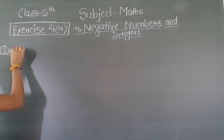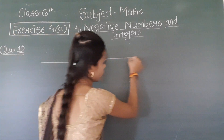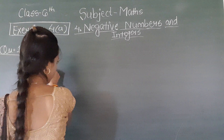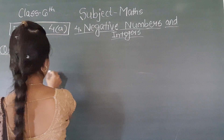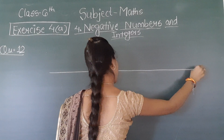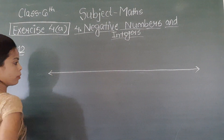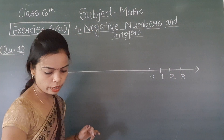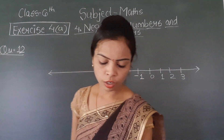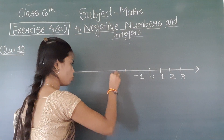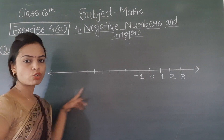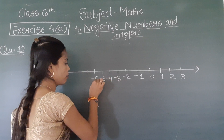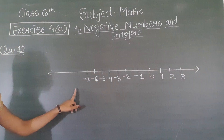Now for question number 12 — there is a number line given. On the right side: 0, 1, 2, 3. On the left side, minus 1 is given, and there are 6 blanks to fill. So we continue: minus 2, minus 3, minus 4, minus 5, minus 6, minus 7.